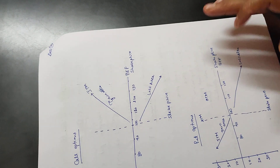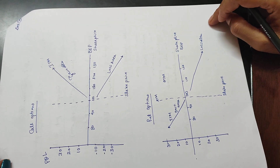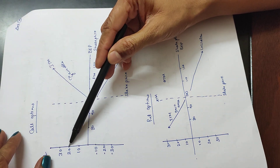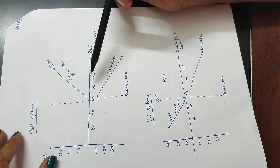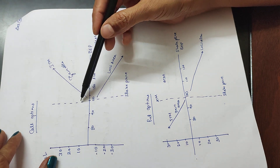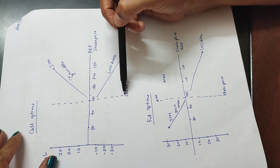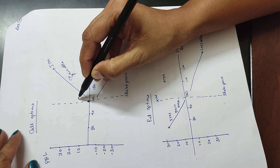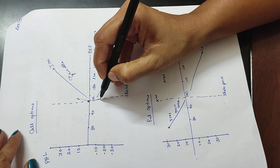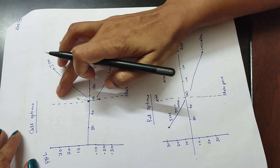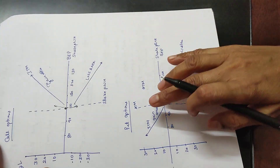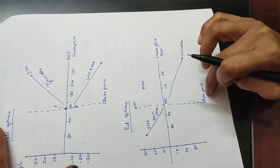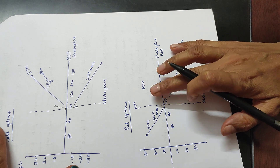Options combinations — call options and put options, in the money and out of the money. For example, with a strike price of $100: if the share price is 80, 90, 100 — a call option at the end can get a profit or a loss depending on whether the price is above or below the strike. Call option: profit area is above the strike price. Put option with 100 strike price: profit when price is below 100, which is out of the money for the call.